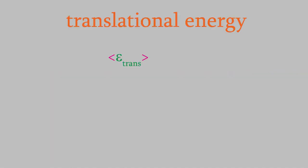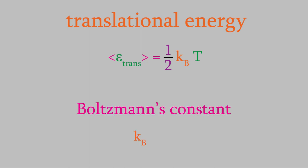It turns out that the average translational energy in one dimension is one-half times kb times T. Here, kb is a constant called the Boltzmann constant, and it's equal to R — the gas law constant — divided by Avogadro's number. Kb is a number that comes up in many different equations in chemistry and physics, so it's worth remembering.